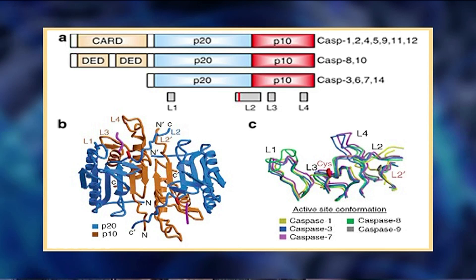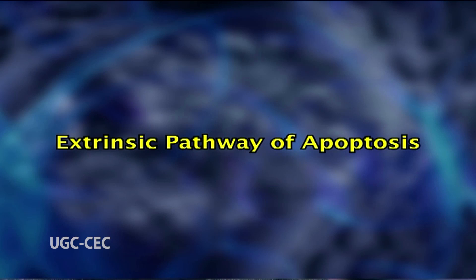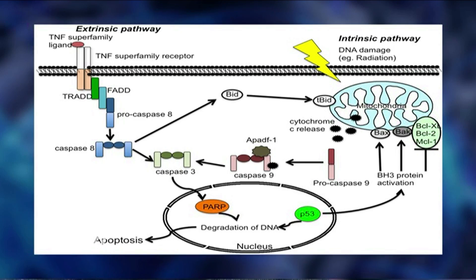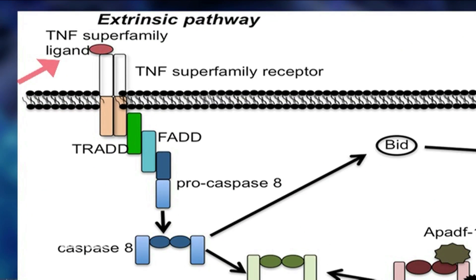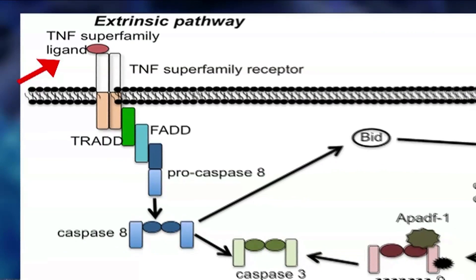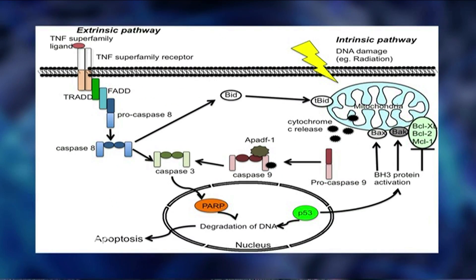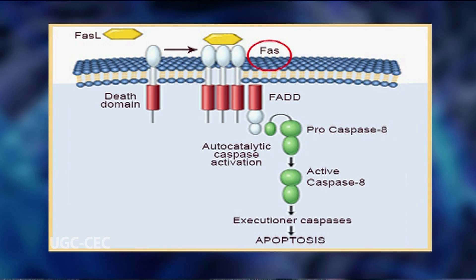In the extrinsic pathway, the stimulus for apoptosis is carried out by an extracellular messenger protein called tumor necrosis factor (TNF), named for its ability to kill tumor cells. These extracellular signal molecules bind with cell surface receptors termed death receptors. One typical example is the Fas receptor, a member of the TNF receptor family. Binding of TNF to the trimeric receptor produces a change in conformation of the receptor's death domain, leading to the recruitment of a number of proteins.